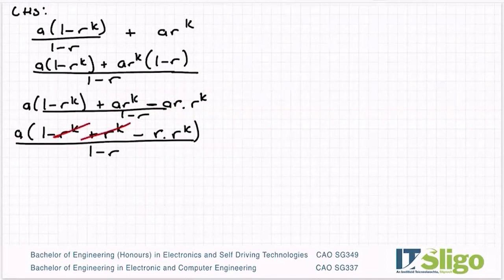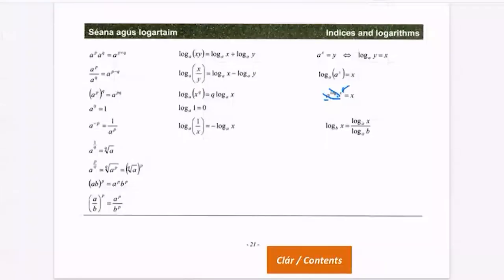Okay, they're going to cancel for me. So I'm left then with a times 1 minus r by r to the power of k over 1 minus r. And using the rules of indices.